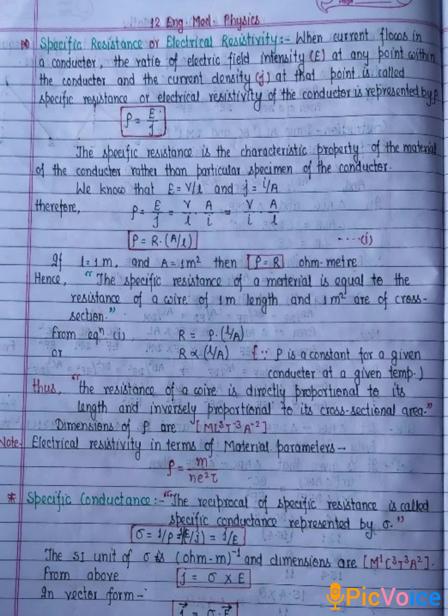We have studied that E is equal to V by L and current density J is equal to I by A. Therefore, by putting the value of E and J, we get rho is equal to E by J is equal to V by L into A by I or V by I into A by L.